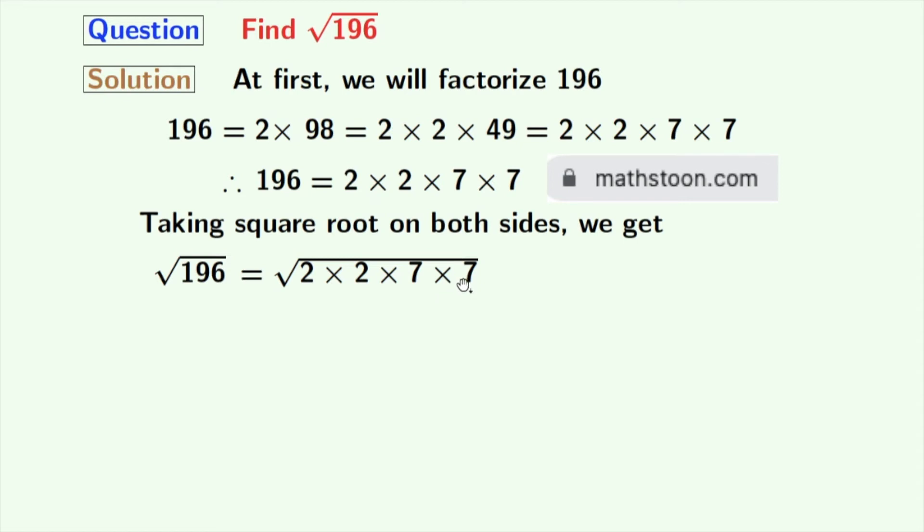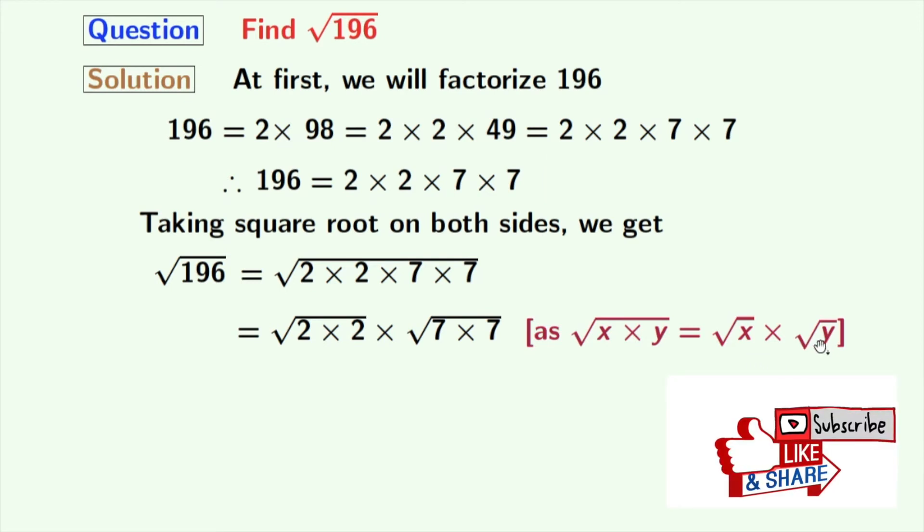After grouping, we get √(2 × 2) × √(7 × 7). Here we have used the rule √(x × y) = √x × √y, where x is 2 × 2 and y is 7 × 7.